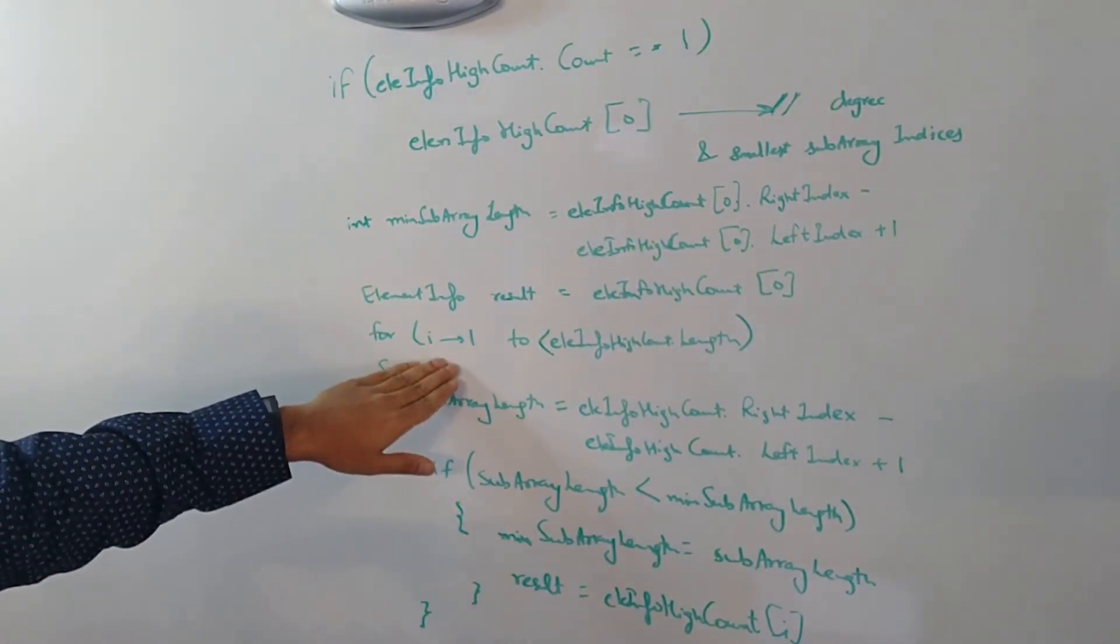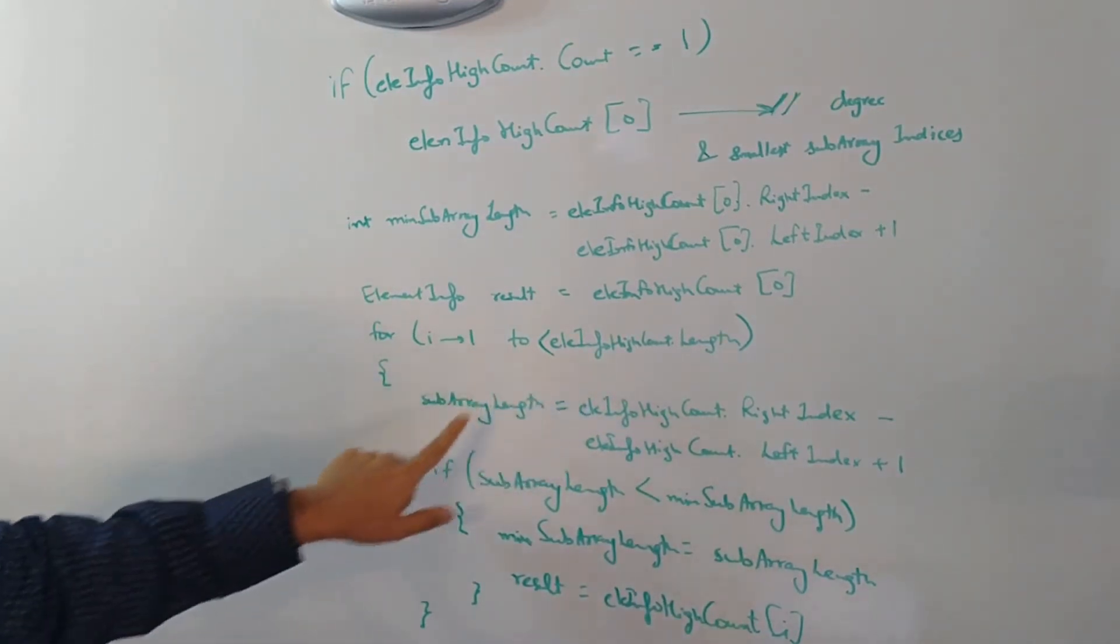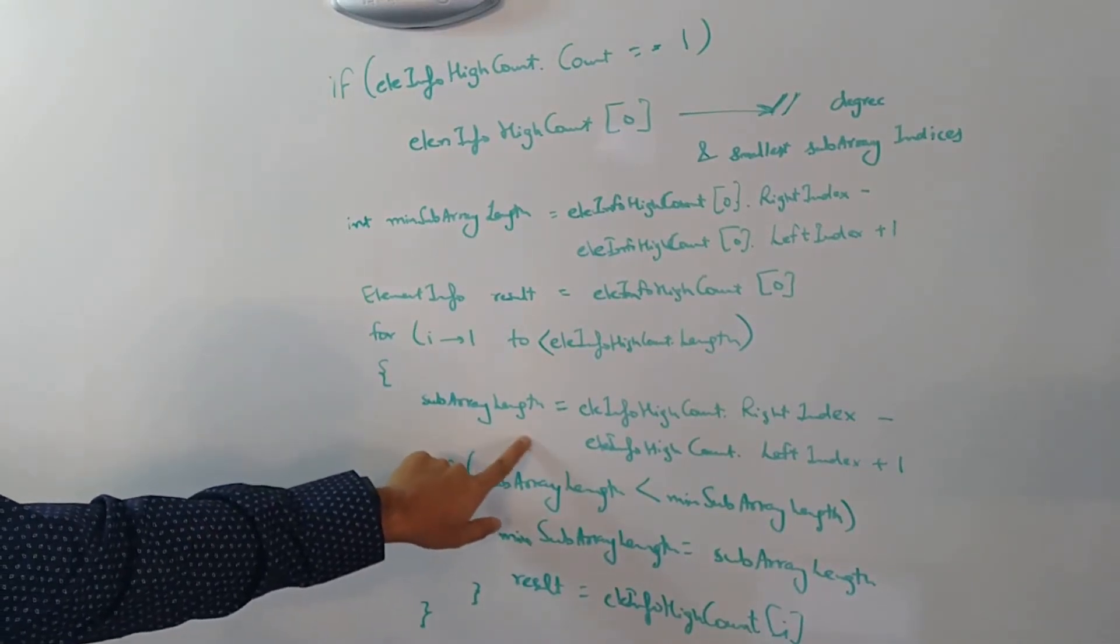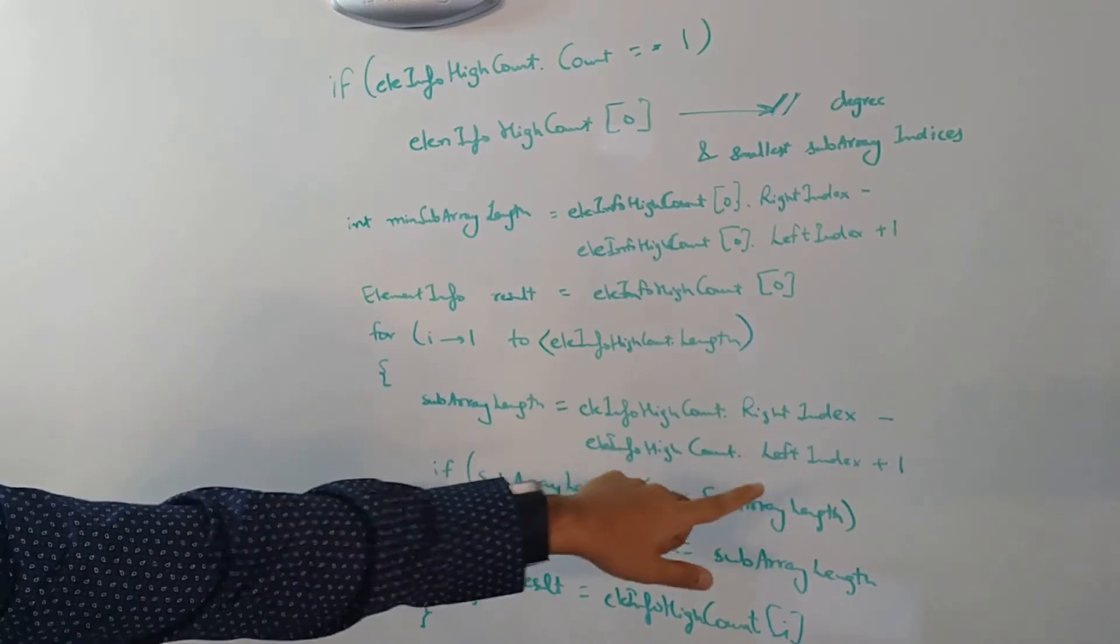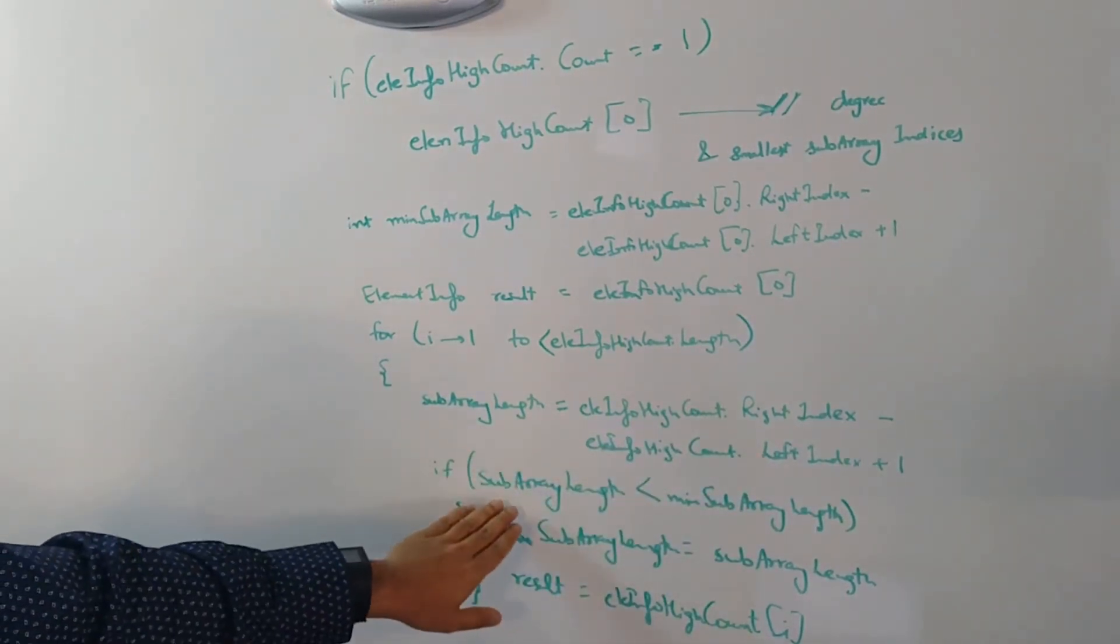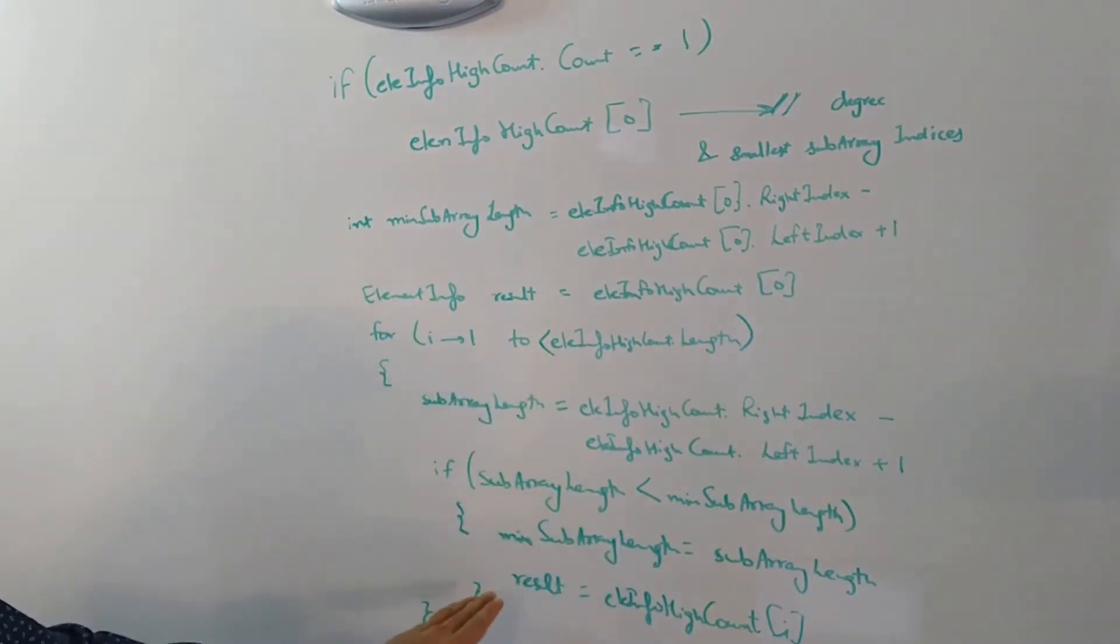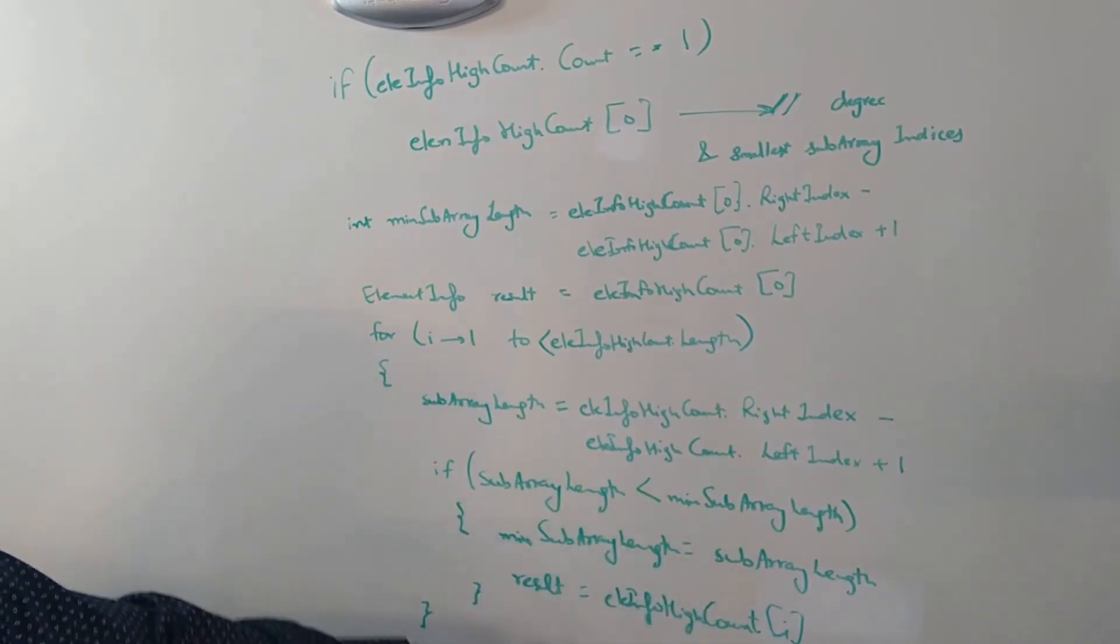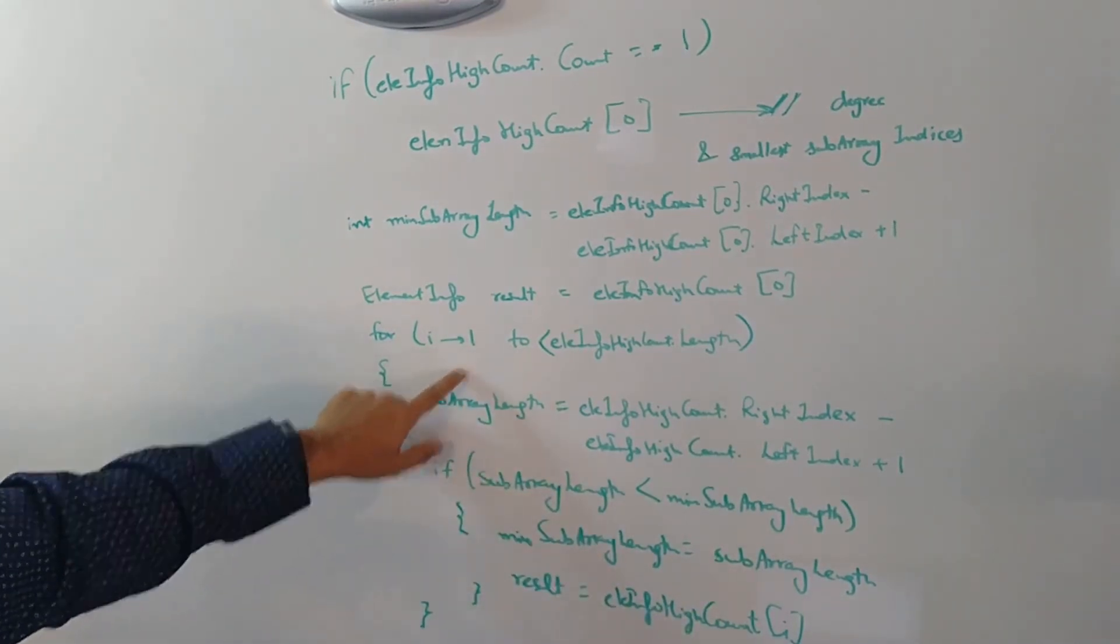Next, we start our for loop from one to the end of this list and for each and every element, we are calculating the subarray length by the same way. We subtract the right index minus left index plus one. If the subarray length is less than the minimum subarray length that we had initially, then we replace the minimum subarray length to the new subarray length and the result is also changed to ele info high count i which is the current element in the loop.